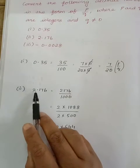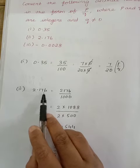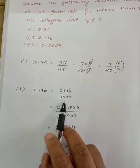Now next we have 2.176. Next to the decimal point we have three numbers. So we will write this number and we have to write divided by 1000.